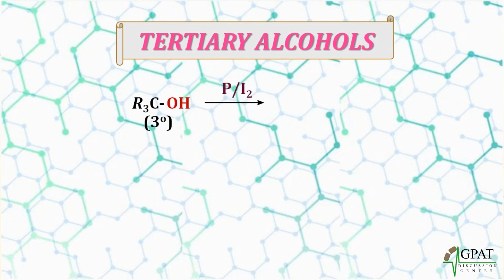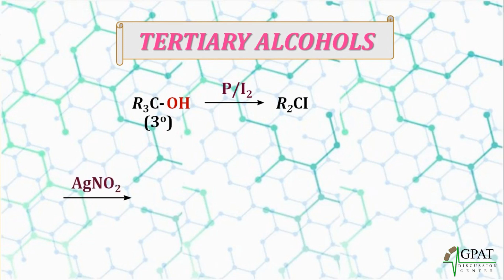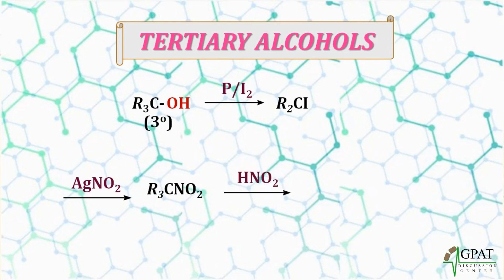For tertiary alcohols: when the tertiary alcohol reacts with phosphorus and iodine, it forms the alkyl iodide. However, when this alkyl iodide is treated with HNO₂, no reaction occurs and no color is observed. These are the three major color identifications for differentiation between primary, secondary, and tertiary alcohols.